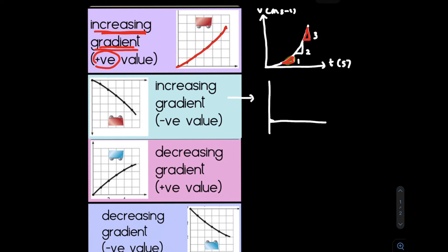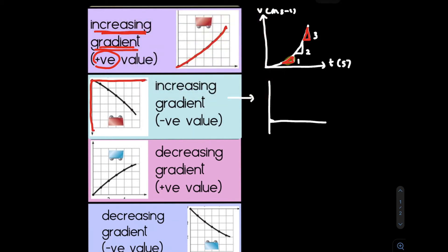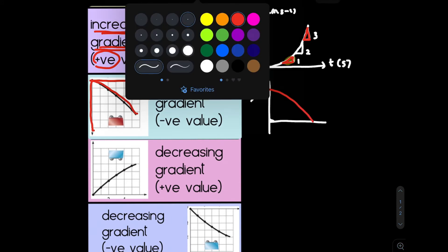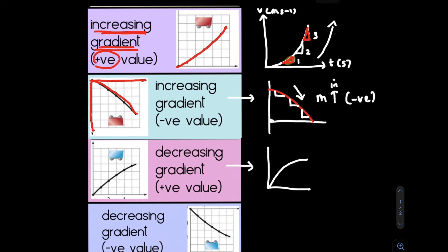The curvy graph can also appear in different positions. One version starts from the origin and goes downward. For this shape, the gradient keeps increasing but in the negative direction — so the gradient is increasing but produces negative values.